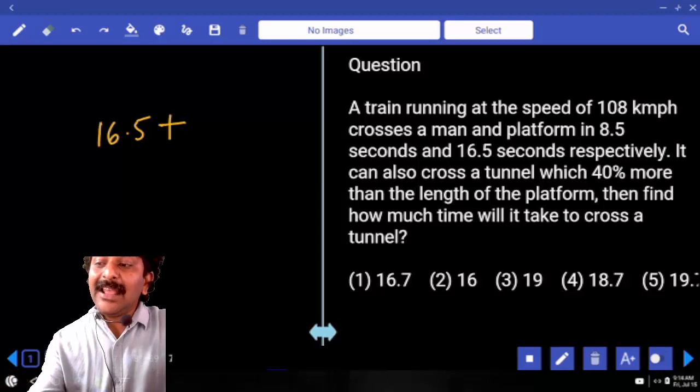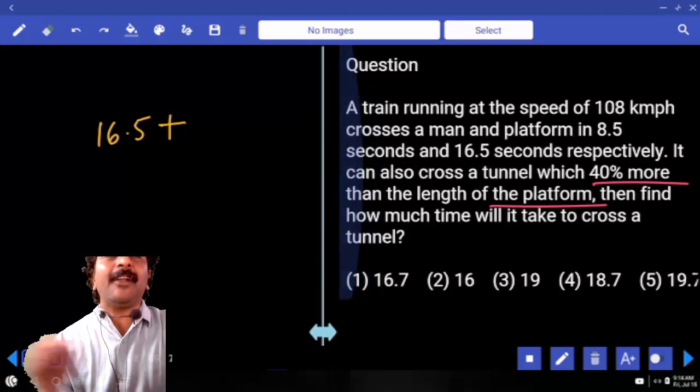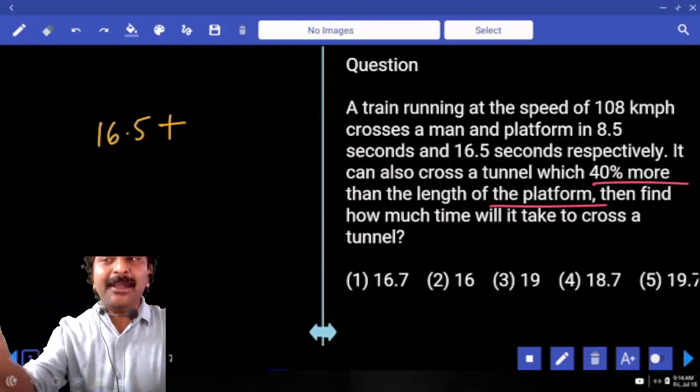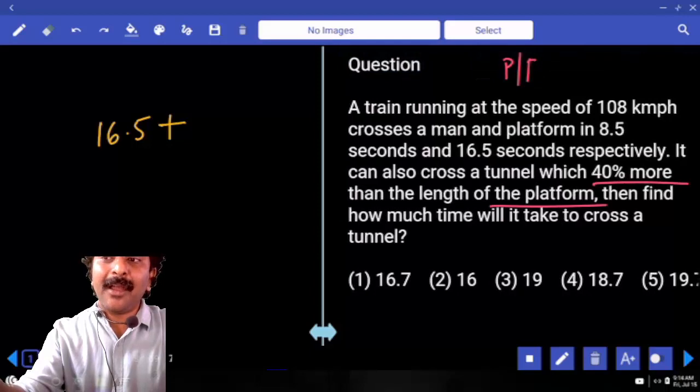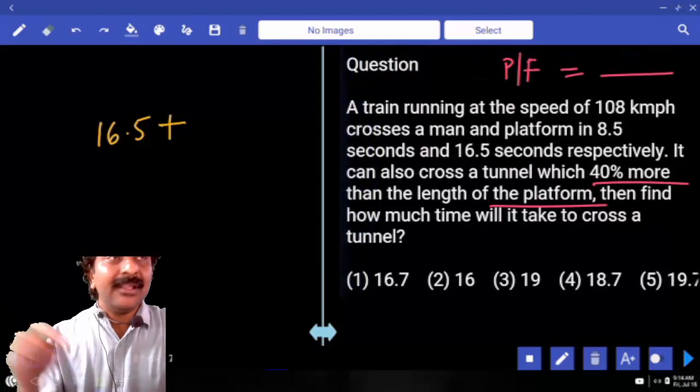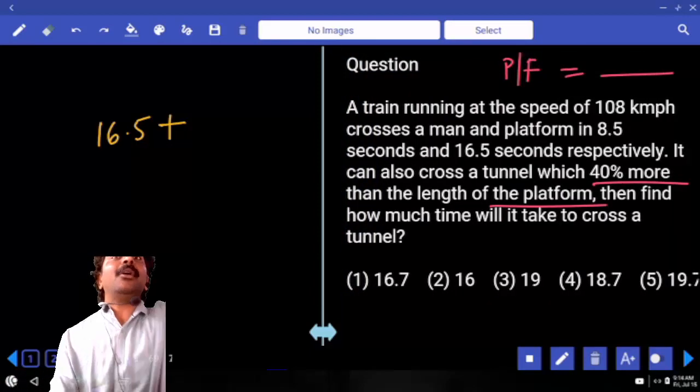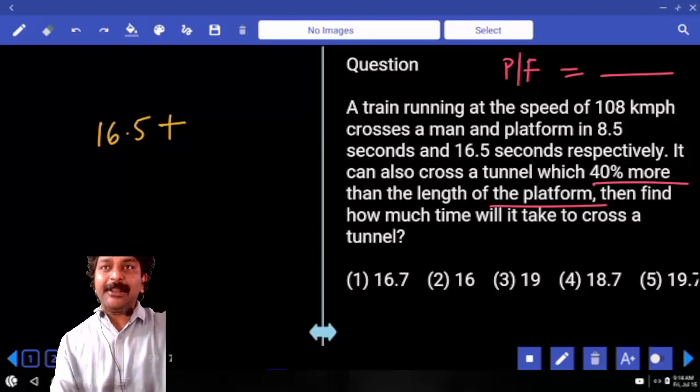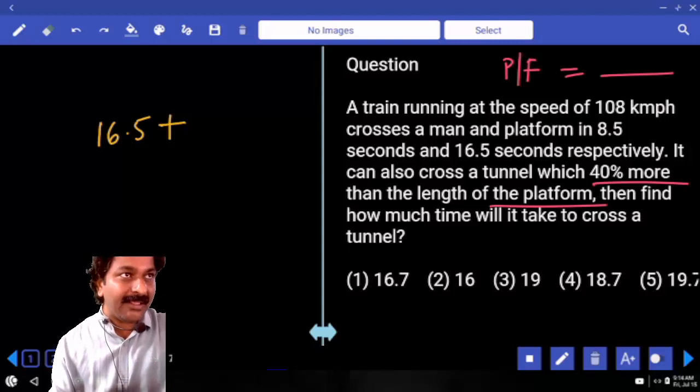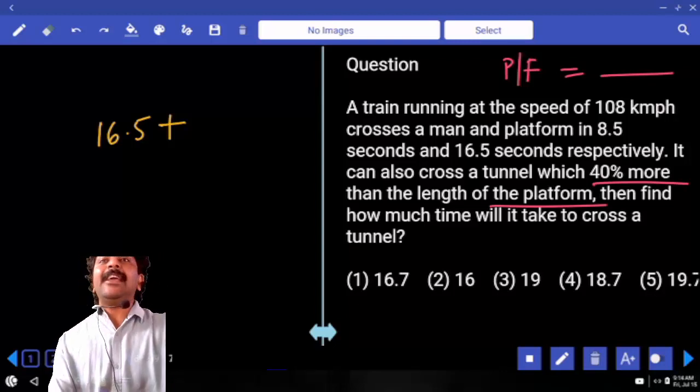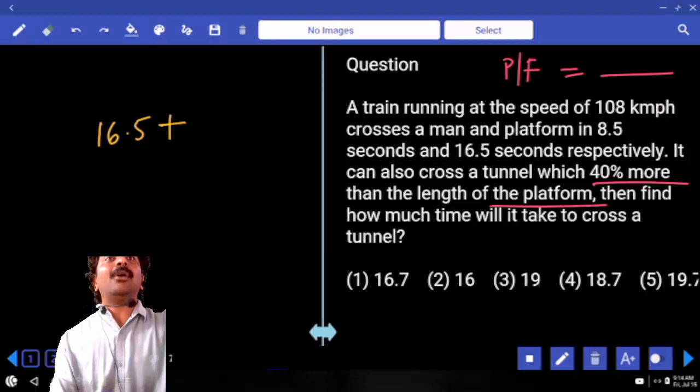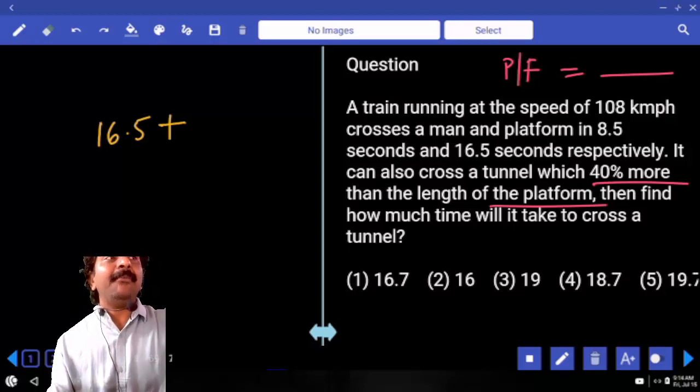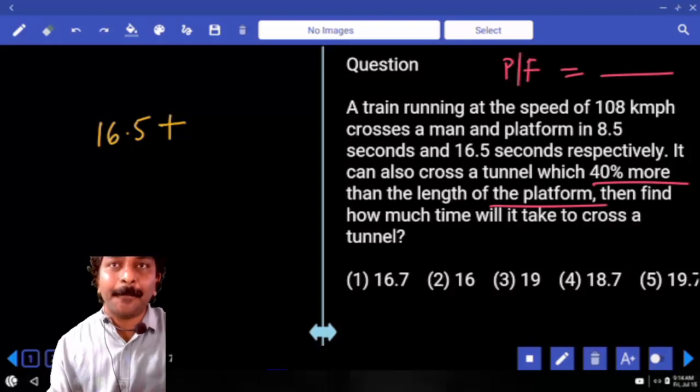Now tunnel length is what percent more than the platform length? 40%. That means whatever the time it takes to cross platform, it takes 40% more time to cross tunnel length. Because tunnel length is 40% more than the platform length. In terms of time also, it will take 40% more time than the time it takes to cross the platform.